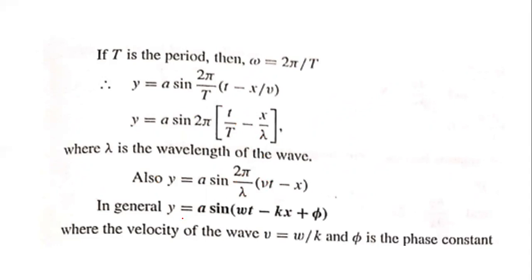The equation will be y equals a sin (omega t minus kx plus phi), where the velocity of the wave is given by v equals omega by k, and phi is the phase constant. This is the equation for the generalized plane progressive wave.